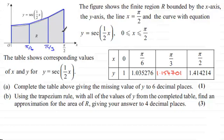The formula for the trapezium rule is: area of R is approximately half the width of a strip—you can see the width is π/6—times the first height, which is 1, plus twice the sum of all the middle heights, which are these two here.